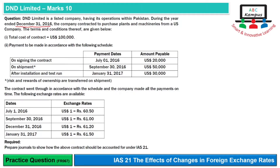Year end hamaare paas hai. Total cost of contract $100,000 hai. Payment to be made in accordance with the following schedule: signing of contract July 1 ko $20,000 pay kie hai, on shipment September 30 ko $50,000, aur after installation and test run January 31, 2017 ko $30,000 pay kie hai. Is me risk and reward hai wo shipment per transfer ho raha hai, yani is time per hum asset ko record kar lenge.